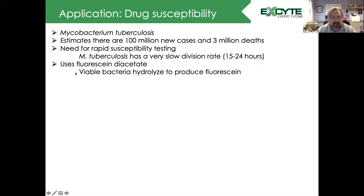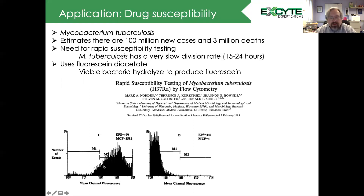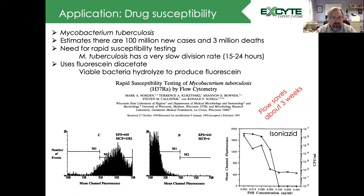The use of fluorescein diacetate — because viable bacteria will hydrolyze this to produce fluorescein — was demonstrated as a way to rapidly test Mycobacterium tuberculosis. Here we see the fluorescence intensity of live bacteria versus dead bacteria, and we can construct concentration curves to look at susceptibility to different compounds. Because of the slow division rate, flow can save roughly three weeks in susceptibility testing.